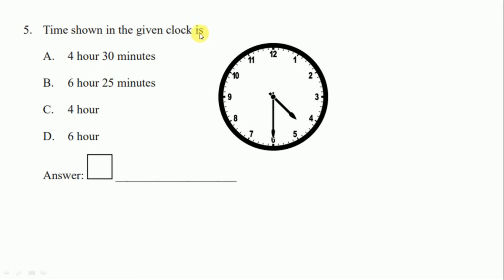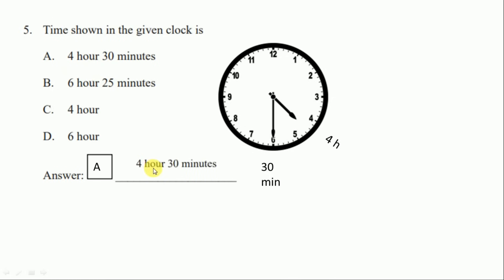Question number five: the time shown in the given clock. The shorter arm of the clock shows the hours — here it is four hours. The longer arm shows the minutes — it is thirty minutes. So our correct answer is four hours thirty minutes, that is option A.